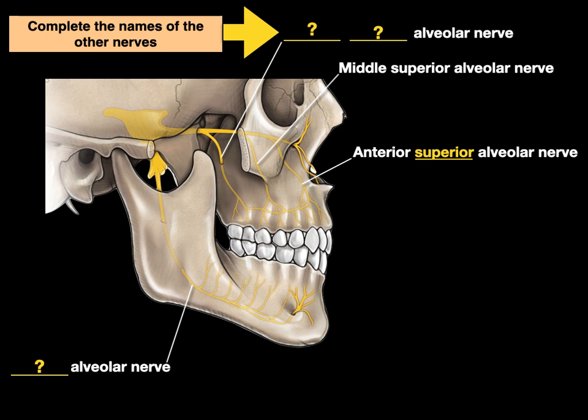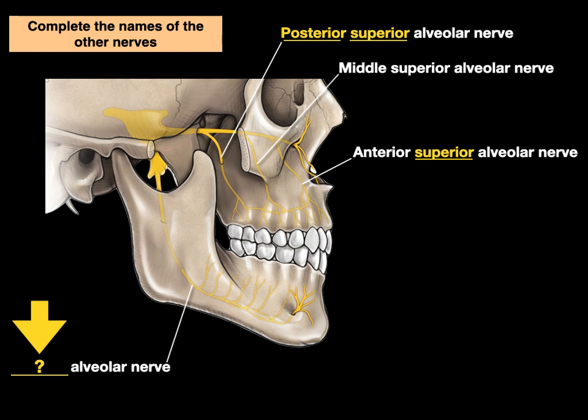Now, if we have an anterior superior and a middle superior alveolar nerve, and this nerve is towards the back of the maxilla — the upper jaw — this is the posterior superior alveolar nerve. And because we have three superior alveolar nerves in the maxilla and there is one in the lower jaw or the mandible, we'll call this one the inferior alveolar nerve.